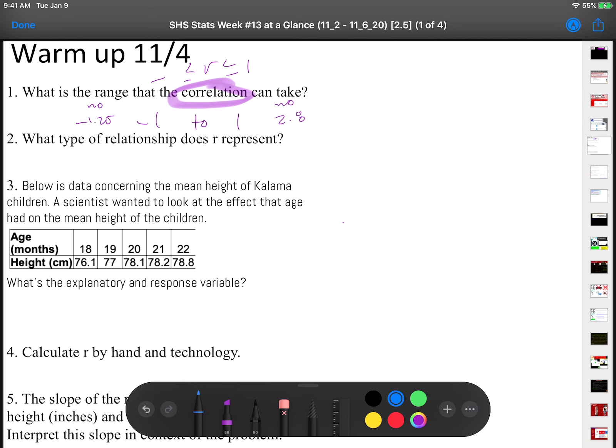Number two, what type of relationship does R represent? R represents a linear relationship.